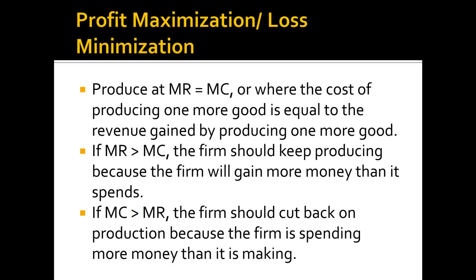The profit-maximizing or loss-minimizing output for any firm is always at MR equals MC, or marginal revenue equals marginal cost. This is because if marginal revenue is greater than marginal cost, the firm should make more goods to make more money, since the additional revenue from each good is greater than the cost of producing it. However, if marginal cost is greater than marginal revenue, the firm is spending more money to produce goods than it gains, so they should cut back on production.